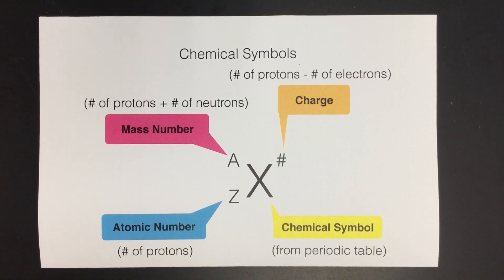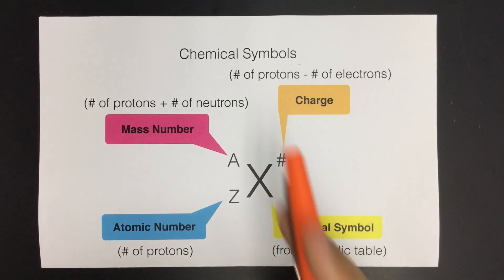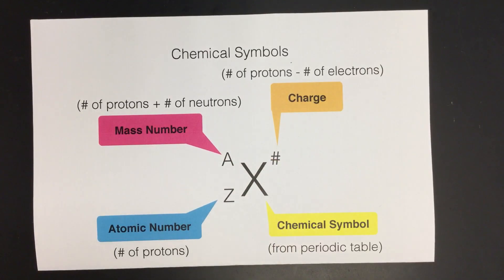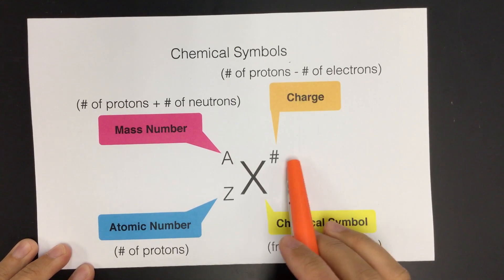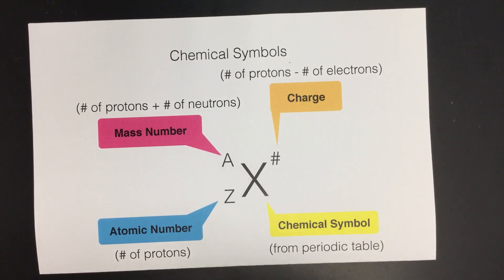Alright kids, it's time for a tutorial video. This video is about writing chemical symbols. We're going to learn about the element symbols and what all of these numbers mean that are around the symbol, how we get those and what information it tells us.